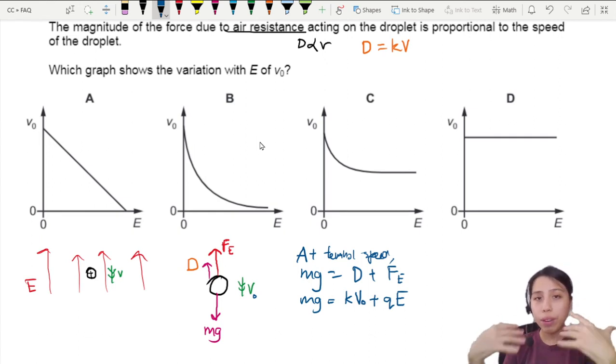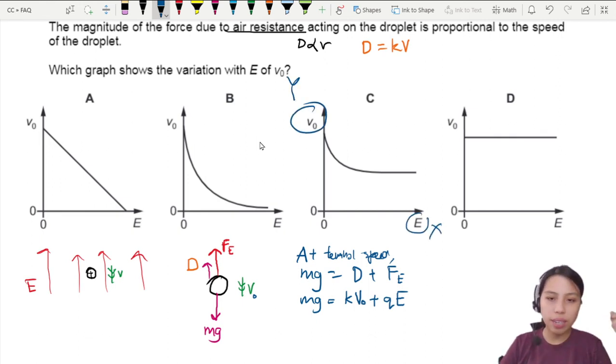This may not particularly help us, but let's try to rearrange this equation into a form where we can recognize in a linear form. So what's on my y-axis? v₀ is on my y-axis. E is on my x-axis. Let's try to get the v₀ out of there. So k times v₀ equals to mg minus qE.